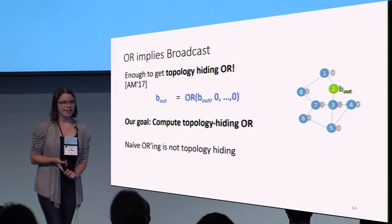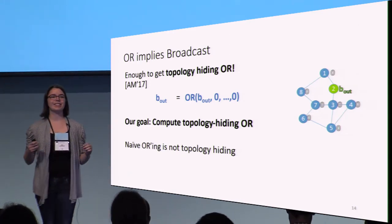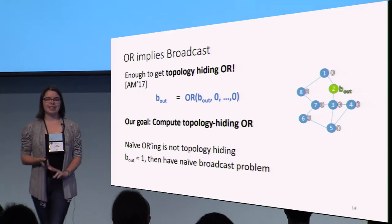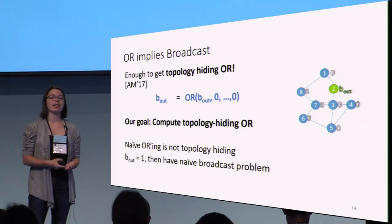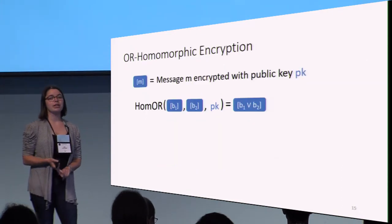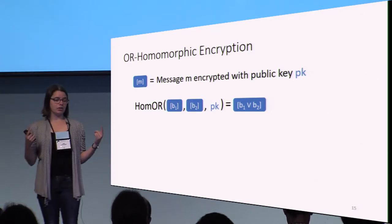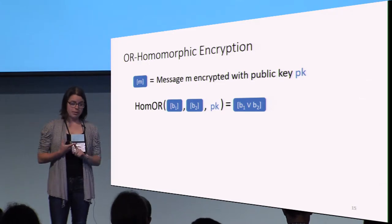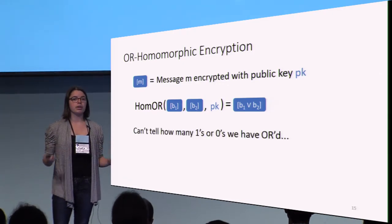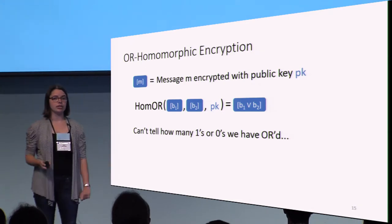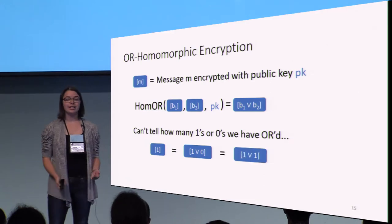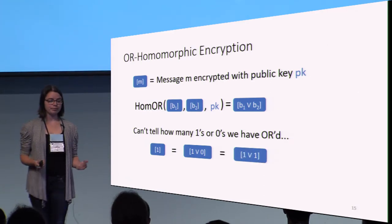However, note that naive OR-ing is not topology hiding. If you just try broadcasting your bit to your neighbors and then OR-ing the bits you get in return, you run into the same problem as with naive broadcast — if the output bit is 1, you know exactly when you receive it. So we're going to need these tools. First, we need our encryption scheme to be OR-homomorphic: you have two encrypted bits and need to be able to homomorphically OR them to get the encryption of the OR of those bits. Moreover, we need to hide the number of times we've OR'd a 1 or a 0. Even if you can decrypt the message, an encryption of a 1 needs to look just like an encryption of 1 OR'd with a 0 homomorphically, and needs to look just like an encryption of 1 OR'd with a 1 homomorphically. It turns out you can get this just using ElGamal.